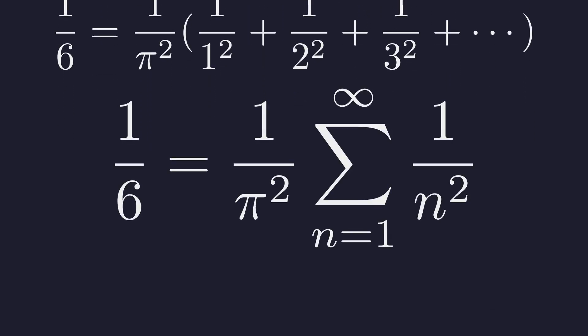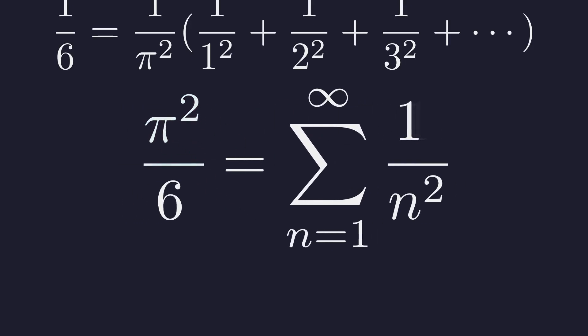Let me write this in summation form. To isolate the sum, we multiply both sides by pi squared. And there it is. The sum equals pi squared over 6. One of the most unexpected and beautiful results in all of mathematics.